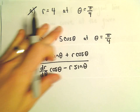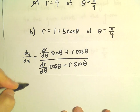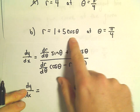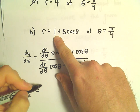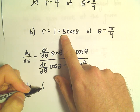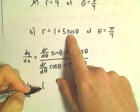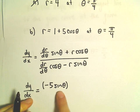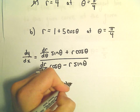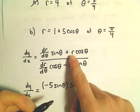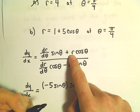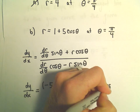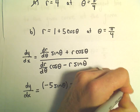Here's our formula that we'll use — the derivative of y with respect to x. We take the derivative of our function with respect to theta. The derivative of 1 is 0, the 5 comes along, and the derivative of cosine theta is negative sine theta, so we get negative 5 sine theta. That's our dr/dθ. We multiply that by sine theta, plus we plug in r, which is 1 plus 5 cosine theta, multiplied by cosine theta.